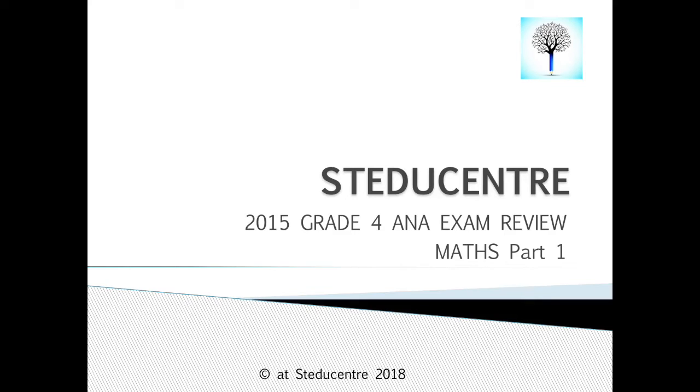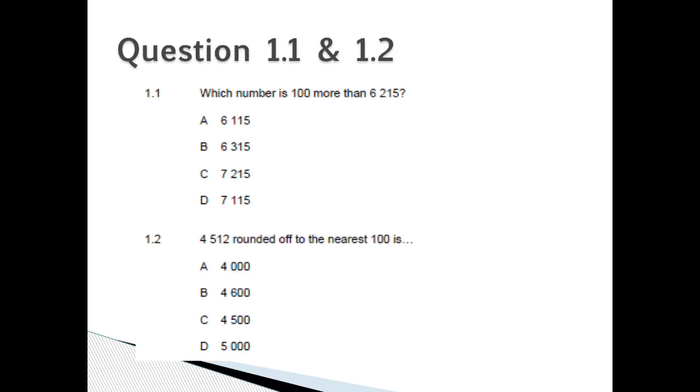Study Center 2015 Grade 4 ANA Exam Maths Review Part 1. Which number is 100 more than 6,215? Is it A. 6,115, B. 6,315, C. 7,215, or D. 7,115? Question 1.2: 4,512 rounded off to the nearest hundred is A. 4,000, B. 4,600, C. 4,500, or D. 5,000?